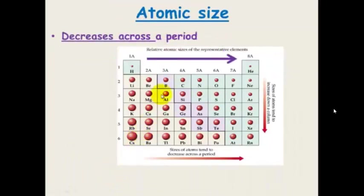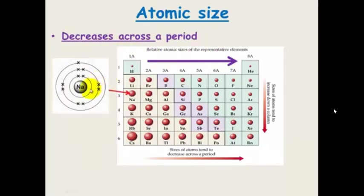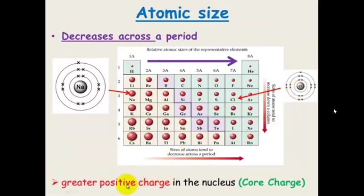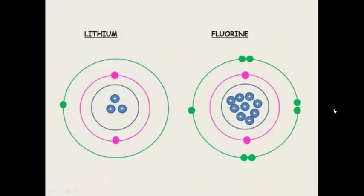What happens though as you go across the period, atomic size decreases and there is a reason for that. If you have a look at sodium which is in period 3, it is going to have a larger radius than chlorine. This is due to it having a greater positive charge and this is known as the core charge. We will compare lithium and fluorine to explain that in detail.